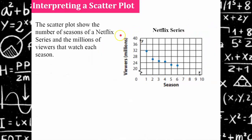Here's how we interpret a scatter plot. This scatter plot shows the seasons of a Netflix series. This shows the millions of viewers that are watching, and this is the season. You can see that as the seasons go on, they lose viewership.